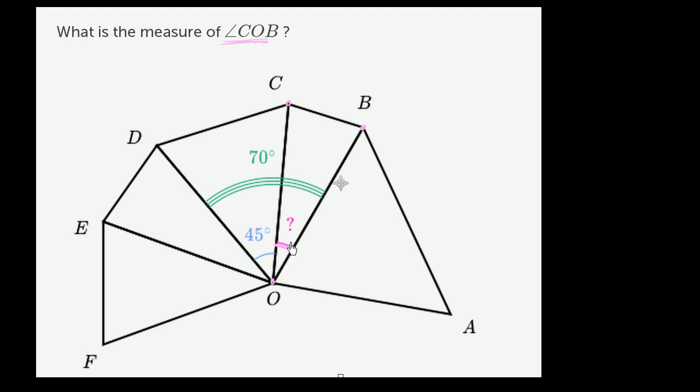And what they do give us is they give us the measure of an adjacent angle. This angle, this 45-degree angle, the angle DOC, is adjacent because it shares this arm, this segment OC, with angle COB.